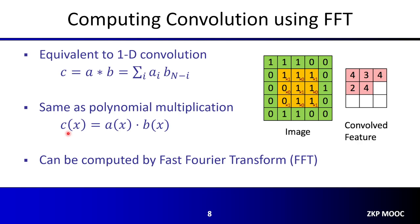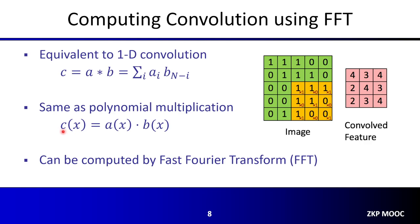This polynomial multiplication can be computed by the classical Fast Fourier Transform algorithm. Basically, you take the FFT of A(x), the FFT of B(x), do the element-wise product, and compute the inverse FFT to get the coefficients of C(x).